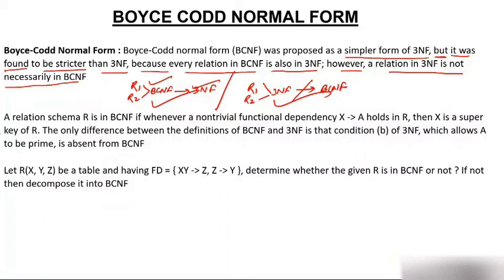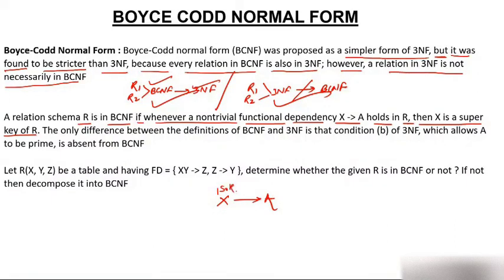A relational schema R is in BCNF if whenever a non-trivial functional dependency X → A holds in R, then X is a super key of R. The difference between 3NF and BCNF: in 3NF, if X → A is a non-trivial functional dependency, then either X is a super key or A is a prime attribute. But in BCNF, X → A requires that X must be a super key — it says nothing about A.